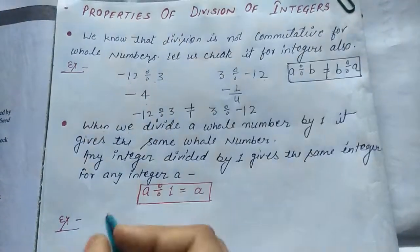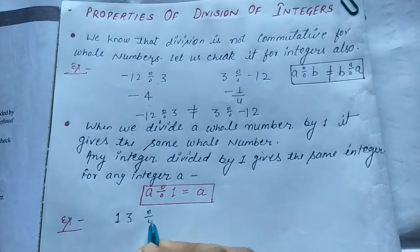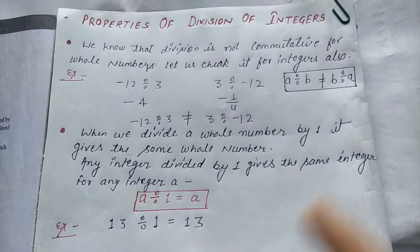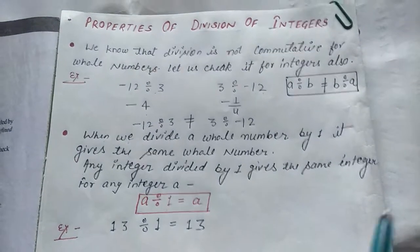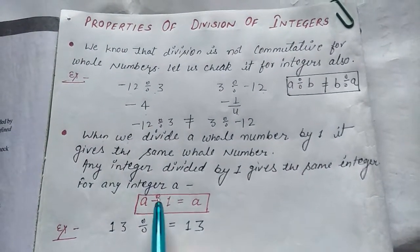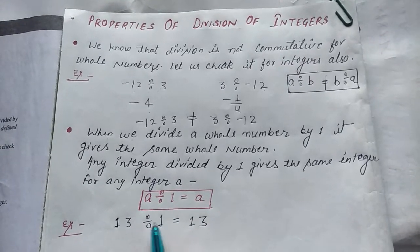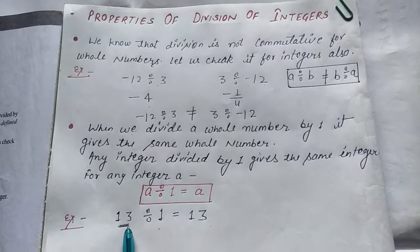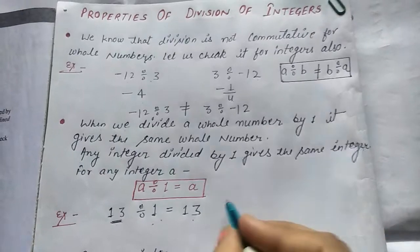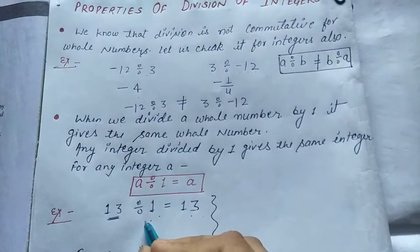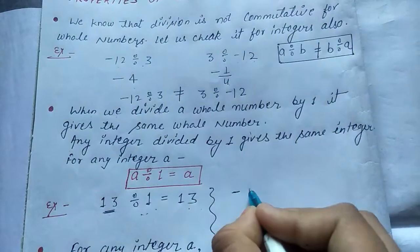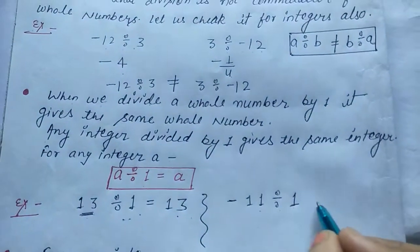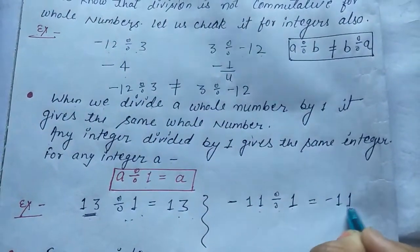Take one example. If 13 divided by 1 is 13. Whole number ko jab hum 1 se divide karte hain, toh same whole number aata hai. Toh kya aisa integers ke liye bhi possible hai? Yes, integer ke liye bhi aisa possible hai. Agar hum kisi bhi integer ko 1 se divide karein, toh same integer aata hai. Minus 11 divided by 1 — when minus 11 divided by 1 is minus 11, same number.